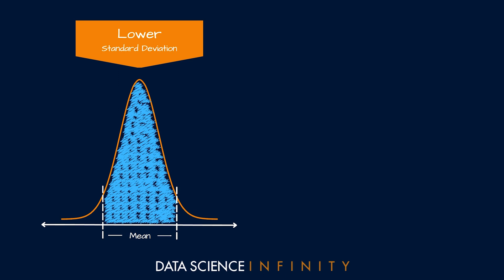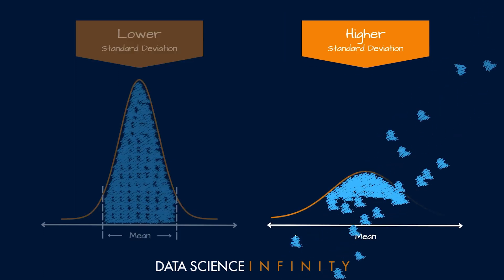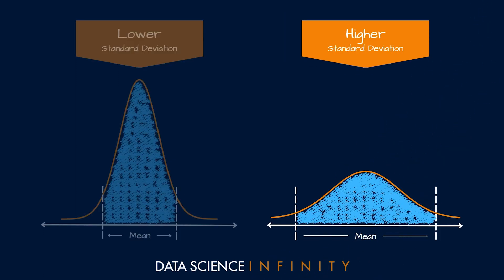Conversely, a higher standard deviation value for a distribution indicates that the set of values in our sample or population are spread more broadly. And again, we saw this earlier with a flatter curve.